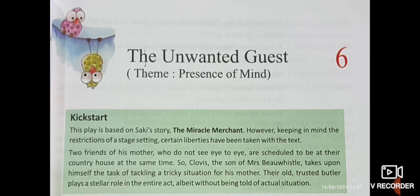Their old trusted butler — a butler is a man who works in a large house whose main duty is to organize and serve food — is trustworthy and faithful, and plays a stellar role. Stellar means the person who makes the way easier. In the entire act, Albert — meaning although — without being told of the actual situation, he helped Clovis to get rid of that situation.